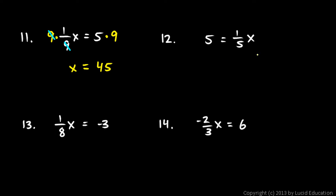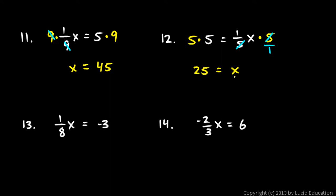Number 12: the x is on the right side of the equation, and that's okay — I still solve it with the same technique. This is 1 fifth times x. To get x by itself, I need to get rid of the 1 fifth by multiplying by 5. If I multiply by 5 on the right side, I also have to multiply by 5 on the left. Whatever you do on one side, you do on the other. The 5 in the denominator and the 5 in the numerator cancel out, so I'm left with 25 on the left and x on the right. So 25 equals x, or x equals 25.